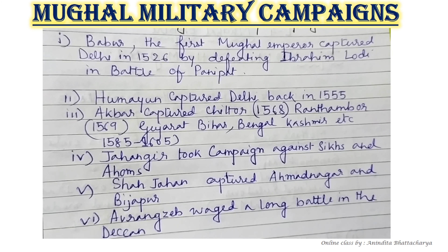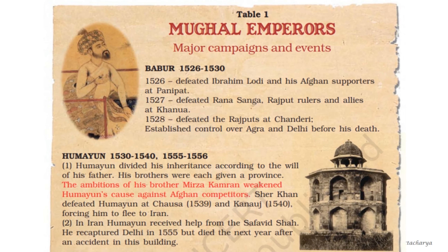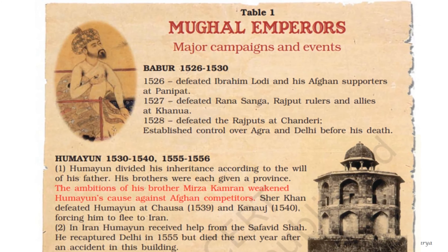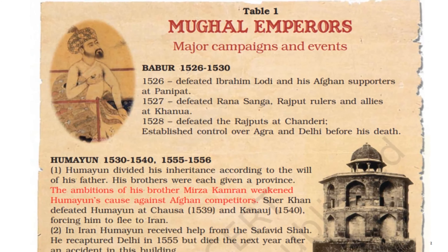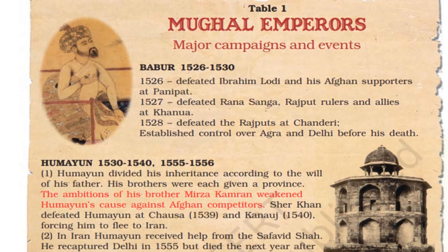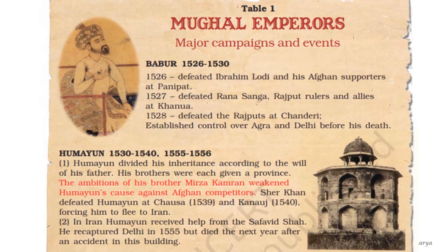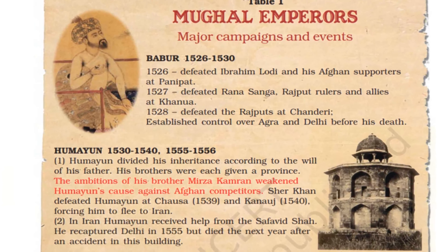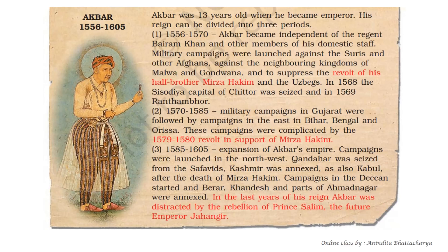Looking at the table of Mughal emperors' major campaigns: Babur defeated Ibrahim Lodhi and Afghan supporters at Panipat in 1526. In 1527 he defeated Rana Sanga and Rajput rulers at Khanwa. In 1528 he defeated the Rajputs at Chanderi and established control over Agra and Delhi before his death. Humayun divided his inheritance according to the will of his father. Sher Khan defeated Humayun at Chausa and Kanauj, forcing him to flee to Iran, but he recaptured Delhi in 1555 and died the next year due to an accident.